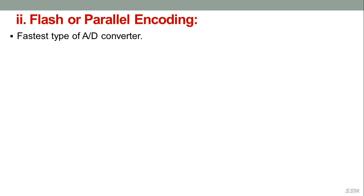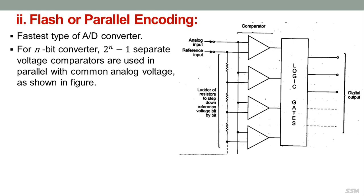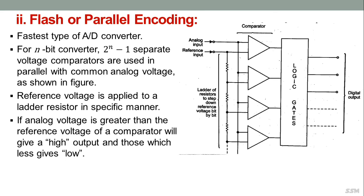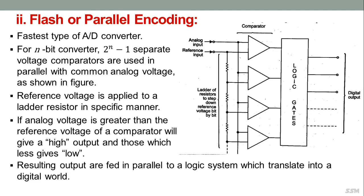Flash or parallel encoding is the fastest type of ADC. For an n-bit converter, 2^n minus 1 separate voltage comparators are used in parallel with a common analog voltage. A reference voltage is applied to a resistor ladder so that the voltage at each comparator input is one bit larger than the previous stage. When an analog voltage is applied, comparators for which the analog voltage exceeds the reference give a high output; others give a low output. The resulting outputs are fed in parallel to a logic system that translates them to a digital word.